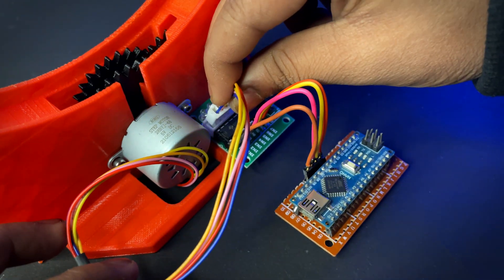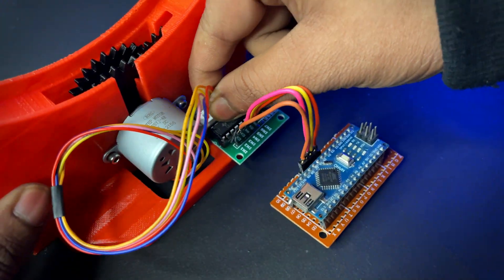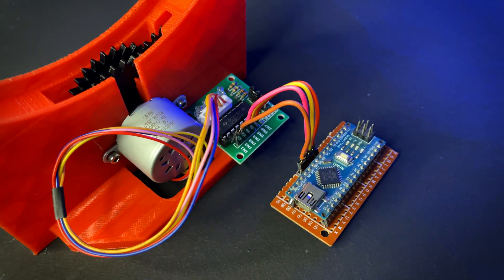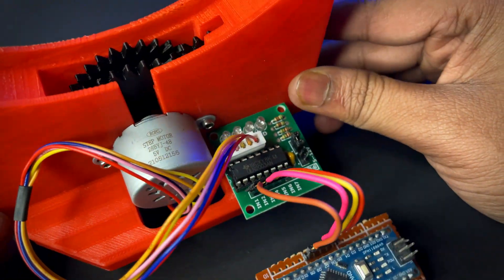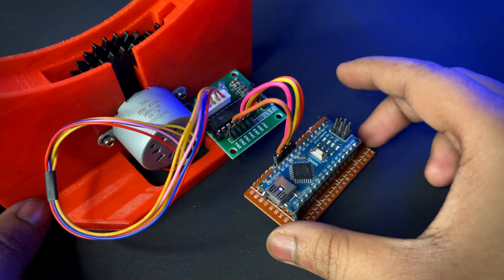Now connect the motor to the stepper motor port. Now connect positive to 5 volt and negative to ground of Arduino.